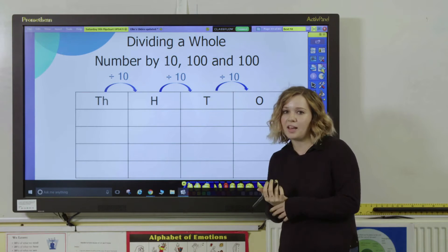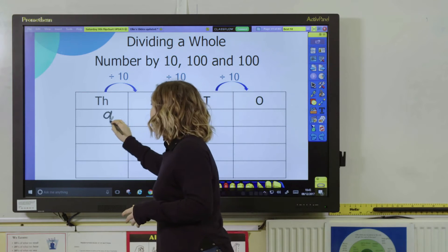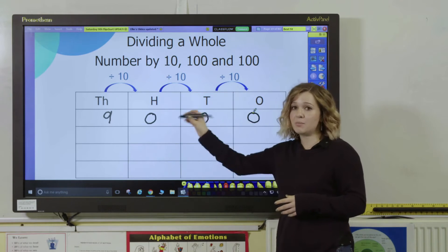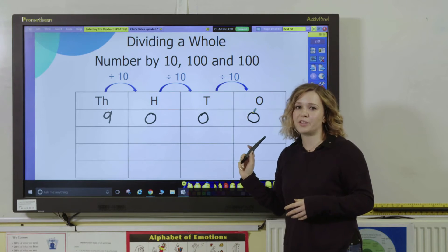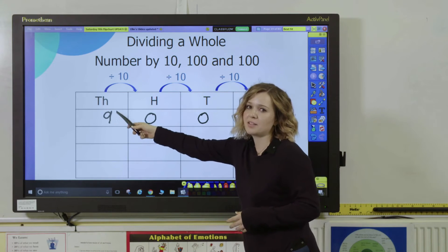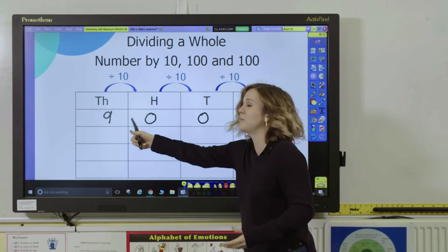So we can start with a nice easy example of this. So let's begin with the number nine thousand. Before you get the pupils to divide it, you might just want to recap the value of each of those digits so that they understand that this nine here represents nine thousands. Again, you could use your base ten to help represent the size of that number.